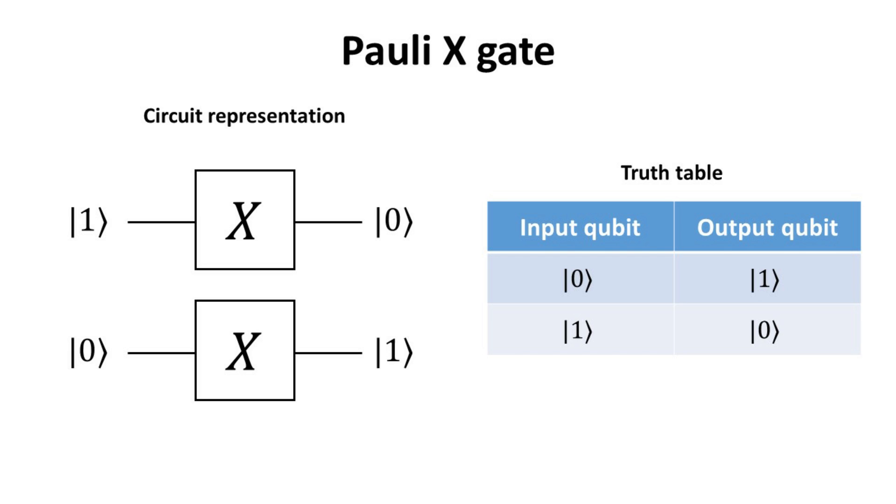In what follows, we shall introduce the different types of single qubit gates, their mathematical representation, and its operation on the qubit. We shall defer the discussion of their physical implementation to future videos.